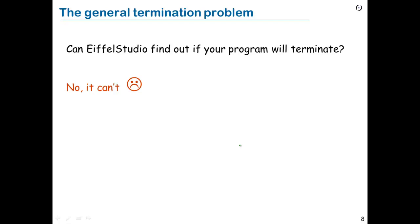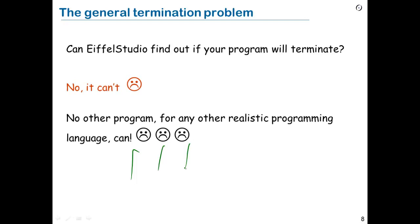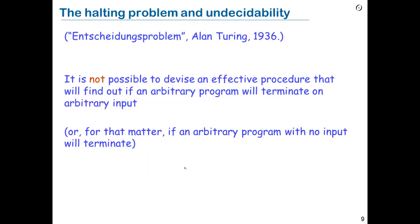Well, the answer is that it can't. And this has nothing to do with Eiffel. You can take a Java compiler, a C compiler, a Python compiler, a Haskell compiler — nothing is going to change in this respect. No program for any realistic programming language can make this kind of determination. It is a general result that tells us that no general determination of the termination of a program can be done by an automatic mechanism. You might believe this is something recent — in fact, it's an old result from 1936.